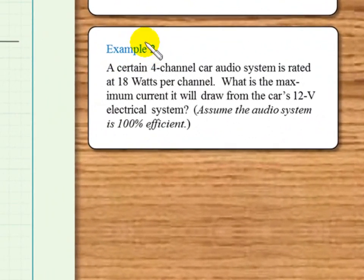Example 2. A certain 4-channel car audio system is rated at 18 watts per channel. What is the maximum current it will draw from the car's 12-volt electrical system? We're told to assume the audio system is 100% efficient.